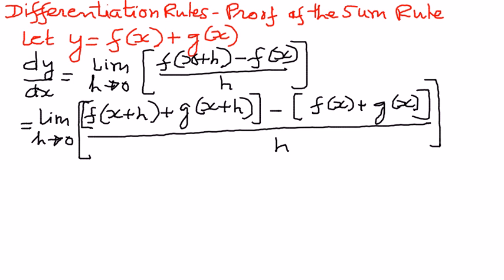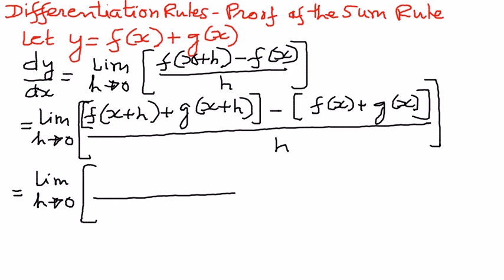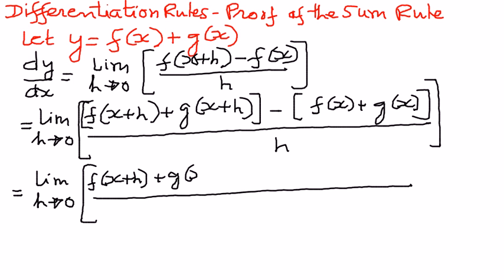Now, if we open up these and distribute the negative sign to the second set of brackets in the numerator part, the expression simplifies as follows. The limit as h approaches zero — the numerator part can be written out as: f of x plus h plus g of x plus h minus f of x minus g of x.